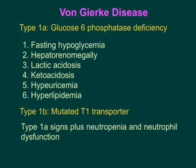Von Gierke disease is a glycogen storage disorder type 1a, caused by deficiency of glucose-6-phosphatase enzyme. Signs and symptoms include severe fasting hypoglycemia, hepatorenomegaly — which is special to Von Gierke disease type 1a — lactic acidosis, ketoacidosis, hyperuricemia, and hyperlipidemia, especially hypertriacylglycerolemia and hypercholesterolemia.